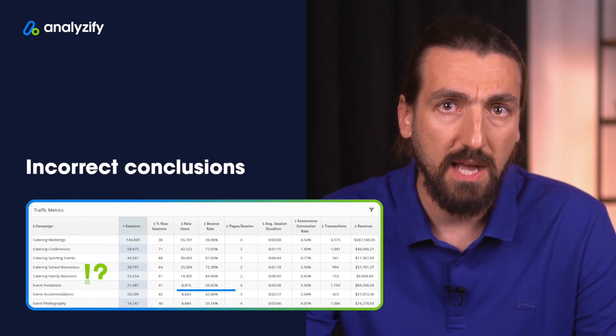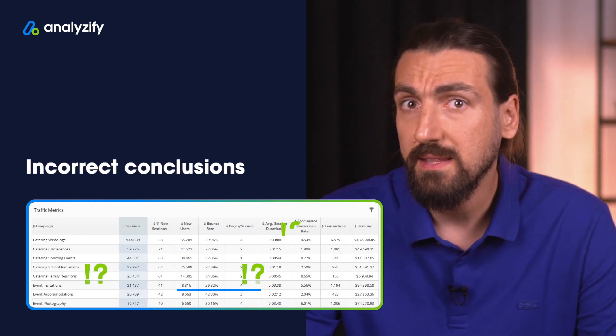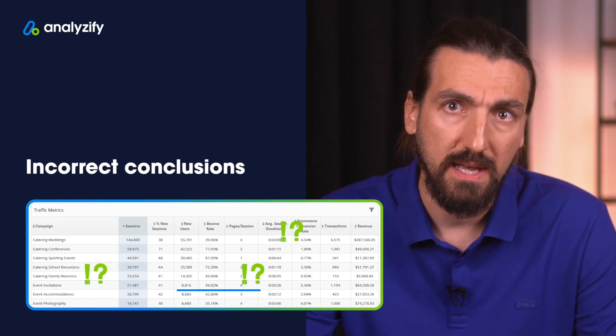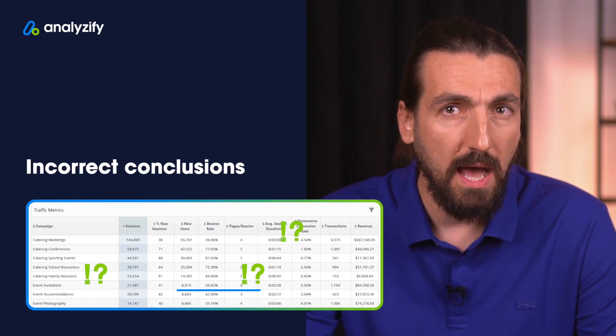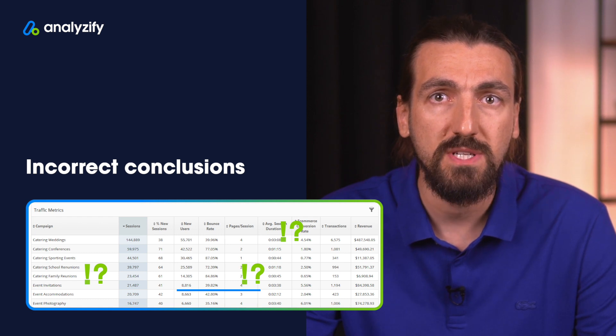Google Ads machine learning algorithm needs to get the right data to optimize for the correct metrics. Also, you optimize your campaigns, but a wrong setup might lead you to incorrect conclusions. For example, you might pause a campaign thinking that it doesn't perform — make sure that you are not missing any conversions.